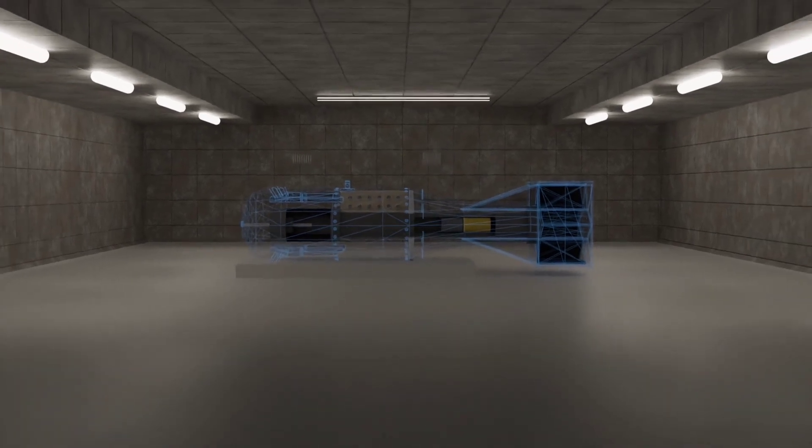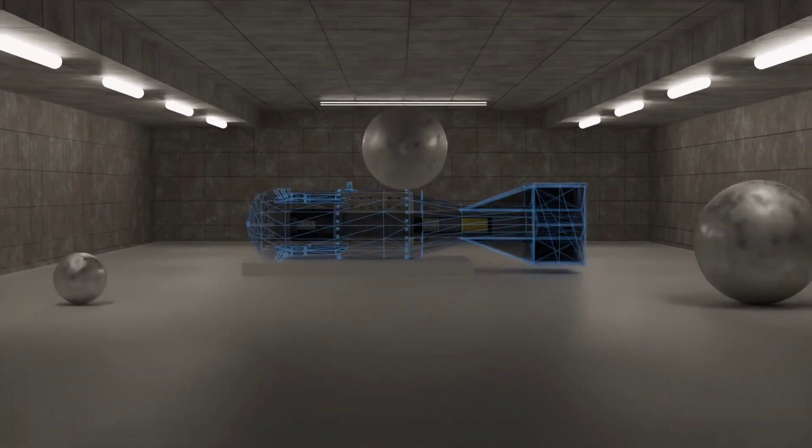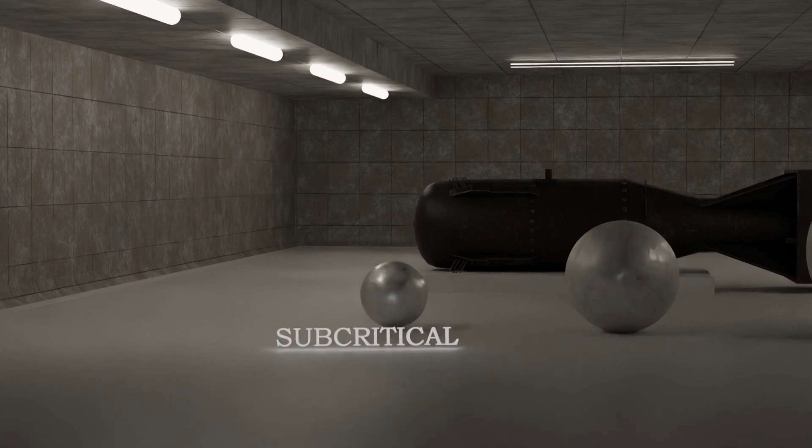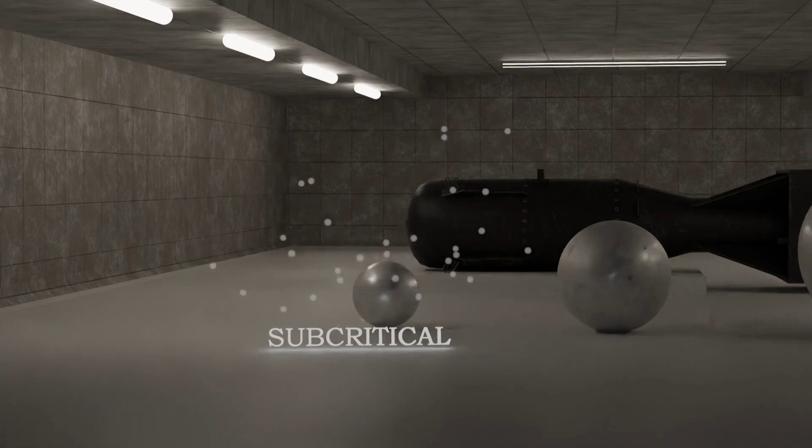To understand supercritical mass, imagine three different spheres of uranium. The first, weighing less than 52 kilograms, is subcritical. When bombarded with neutrons, it releases more neutrons, but most escape, so no chain reaction occurs.